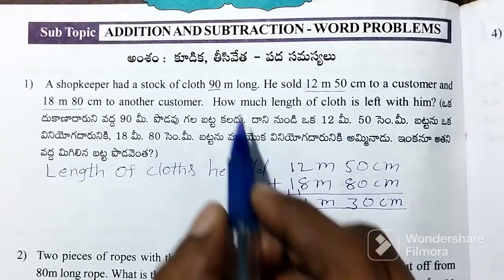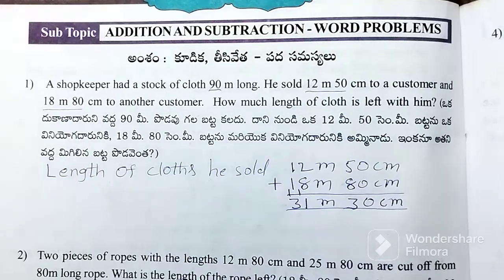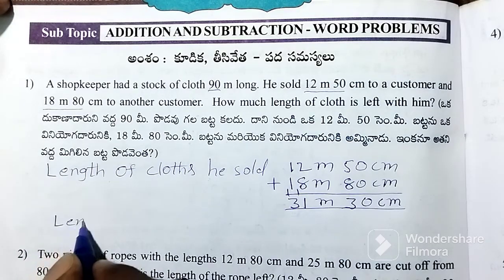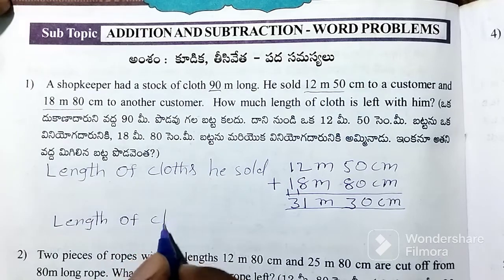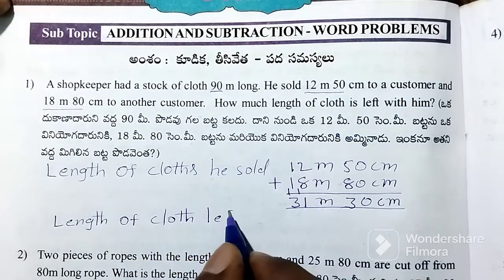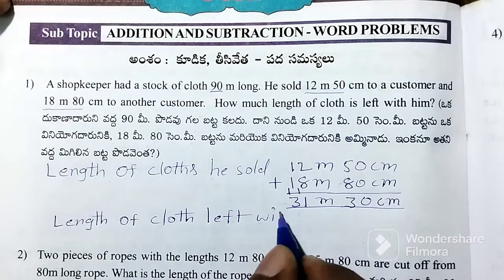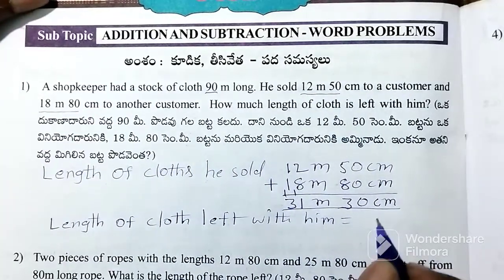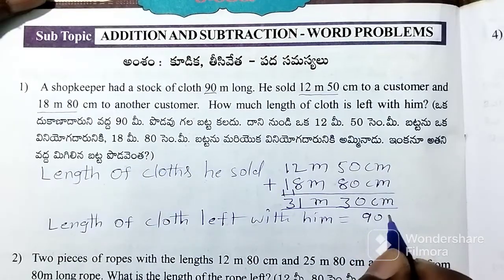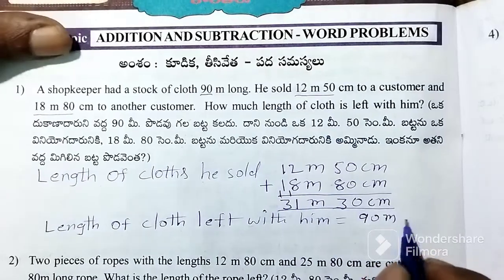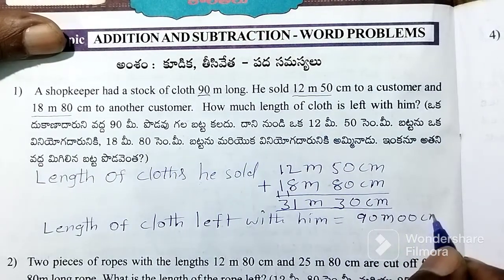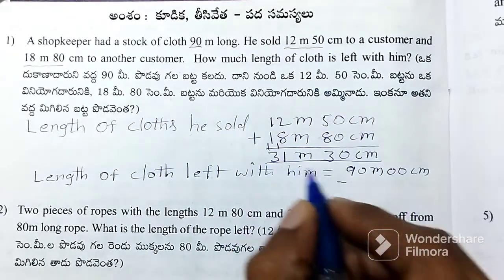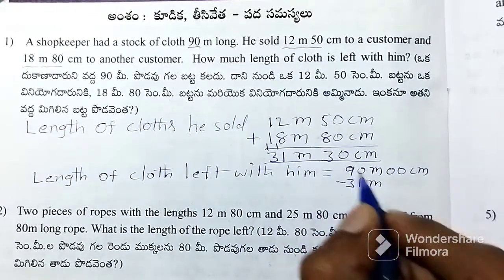Now we subtract from 90 meters. Because centimeters are 0, it is better to borrow. Minus 31 meters 30 centimeters.